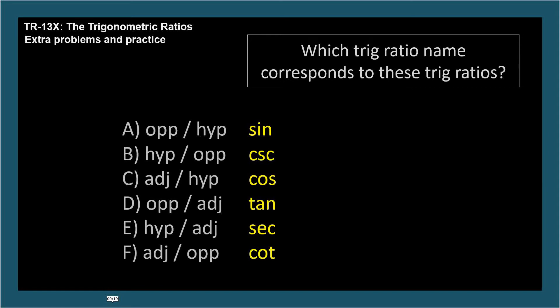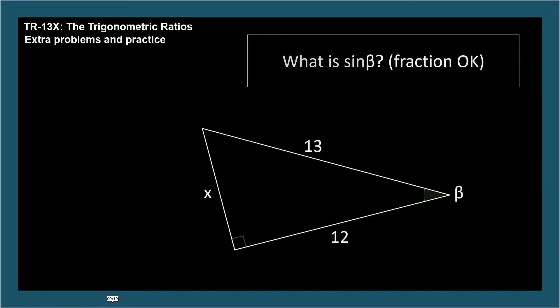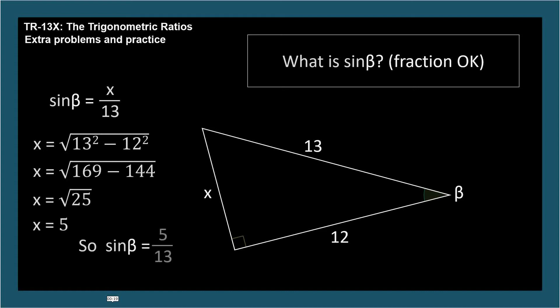What is sine beta? Sine is opposite over hypotenuse, so we could simply say sine beta equals x over 13. But we can do better, because with the Pythagorean theorem, we can figure out that x is 5. So the correct answer is 5 over 13.